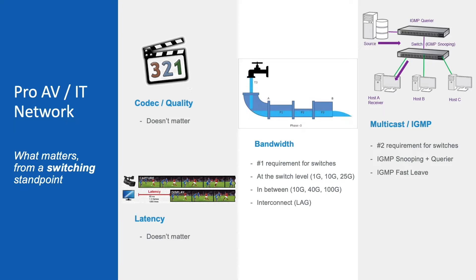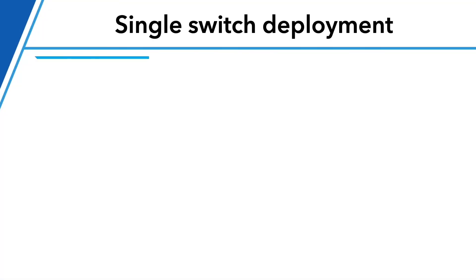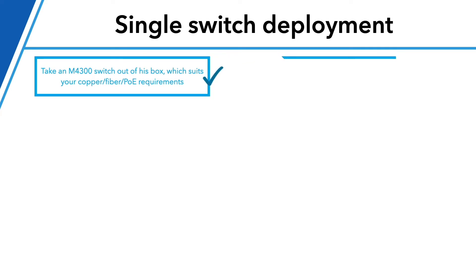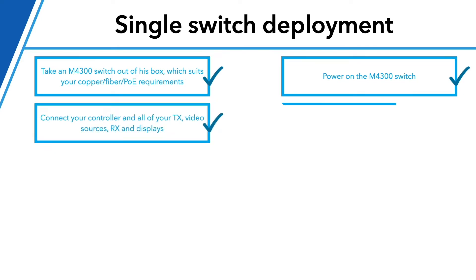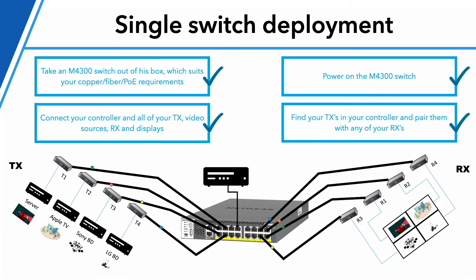Now let's move to the software side — specifically the IGMP implementation of AV over IP. You must select a switch platform capable of at minimum IGMP snooping, querier, and fast leave. On a single switch, you'll never have these problems: an SDVoE-ready switch like the Netgear M4300 comes pre-configured for snooping, querier, and fast leave. Connect your encoders, decoders, and controller and you're good to go. But now comes the main issue for large-scale AV over IP installations with multiple switches.